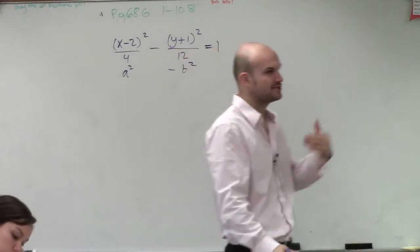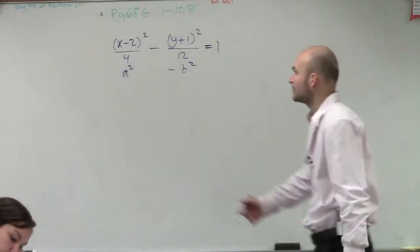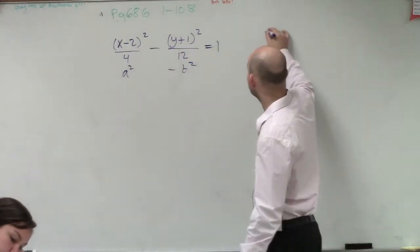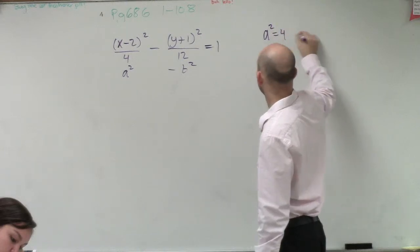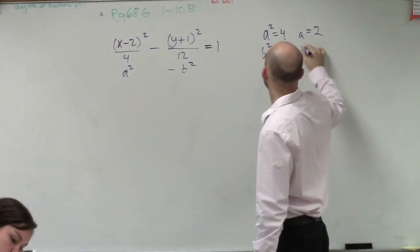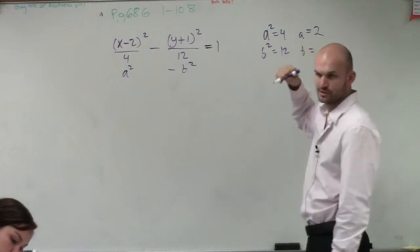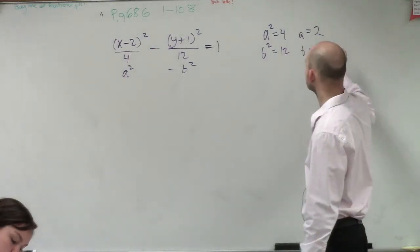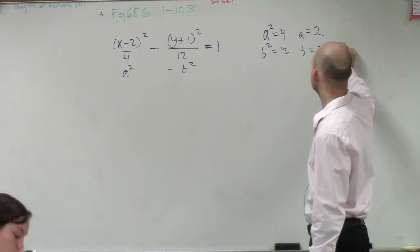Always for your denominator, it's always your a squared minus the b squared. So therefore, I know my a, if a squared equals 4, then a equals 2. If b squared equals 12, then b is going to equal square root of 12, which would be 2 square root of 3.